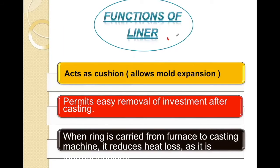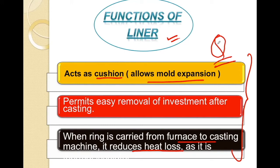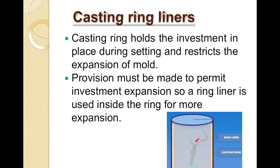The functions of the ring liner are: it acts as a cushion which allows mold expansion; it permits the easy removal of investment after casting; and when the ring is carried from the furnace to the casting machine, it reduces heat loss because it is a poor conductor of heat. These ring liners are traditionally made up of asbestos, but asbestos is carcinogenic in nature. Other options are aluminum silicate ceramic liners, cellulose, or paper liners.